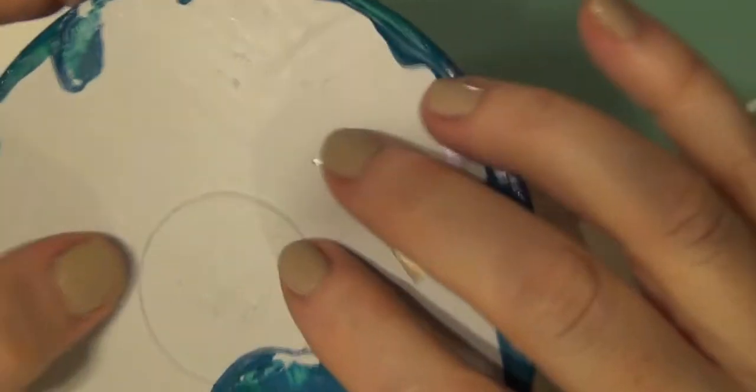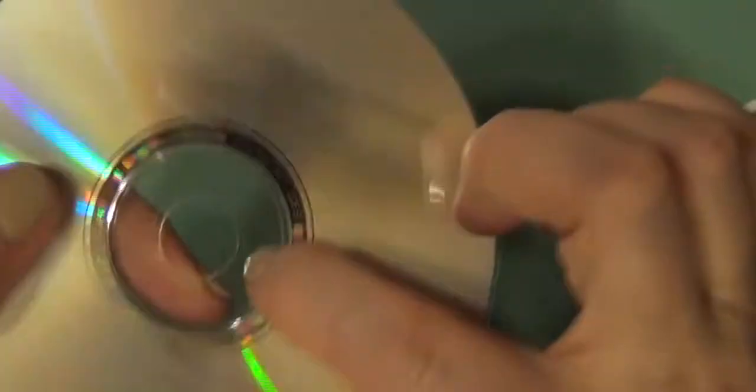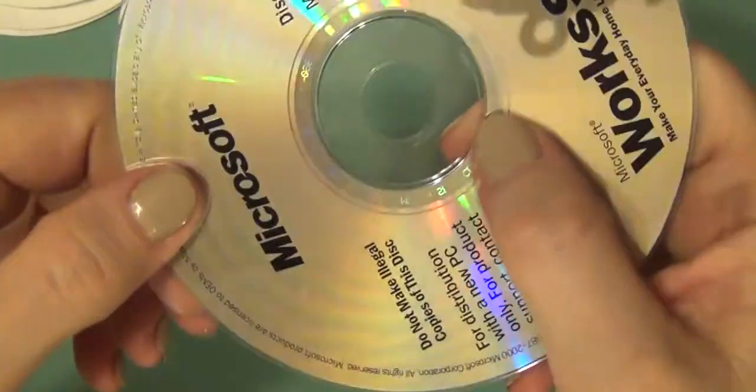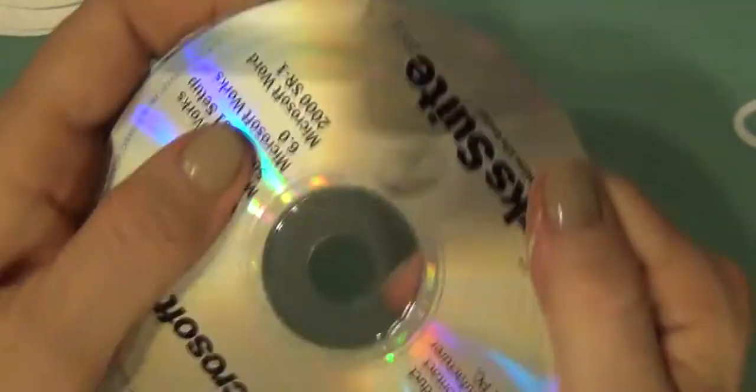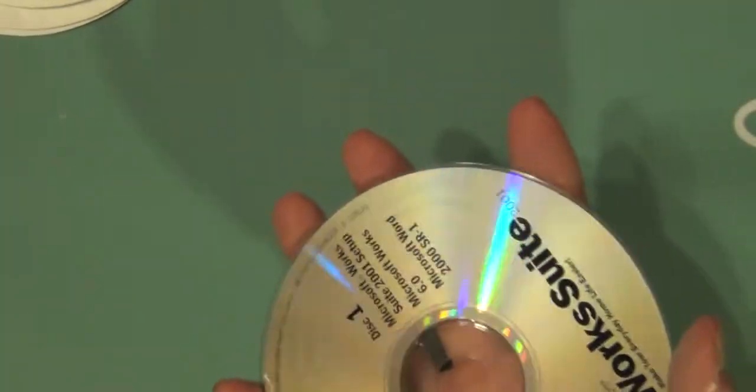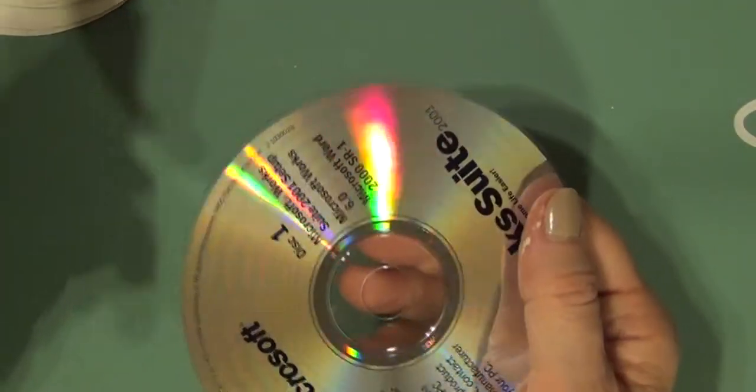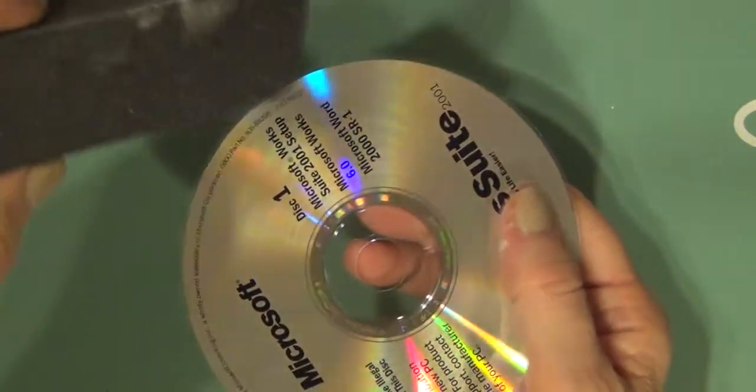When you get your CD or DVD, make sure that ridge side is down. We're not going to work with it. You want the other side and we're going to end up gessoing this and working on this side. But to start off with, I want to go ahead and abrade the surface.